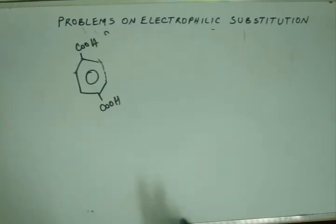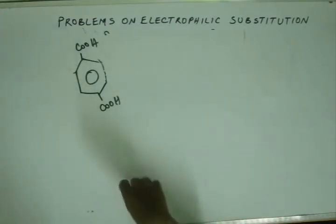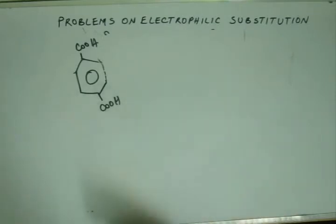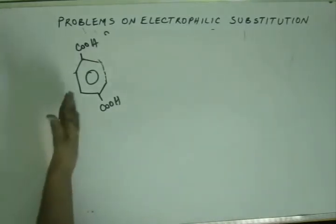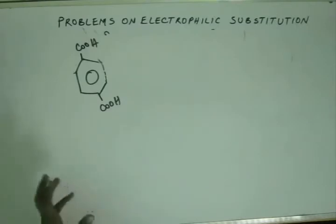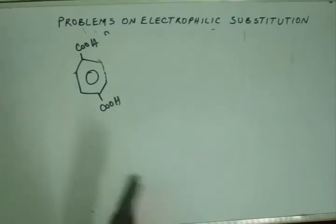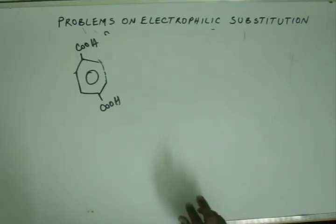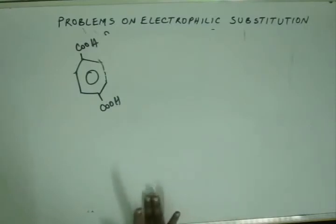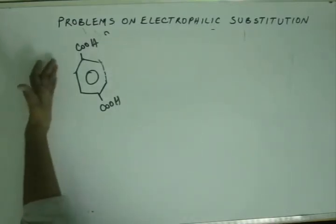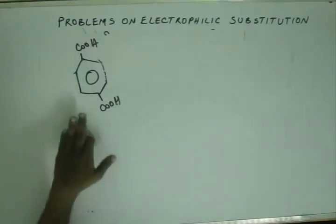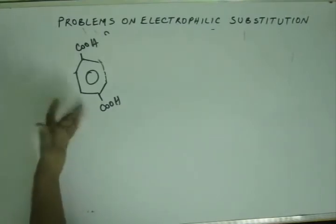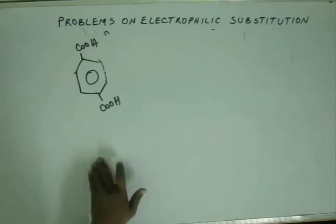Somehow you have to get a group that is Para-directing, get another group at the Para position, and then convert that group into a Carboxylic acid group — because working directly with Carboxylic acid group won't solve the purpose. The convenient group is an Alkyl group via alkylation. Alkyl groups are electron-donating and Ortho-Para directing, so carry out two successive alkylations. Since there is no Hydrogen bonding at Ortho, the major product will be Para-substituted. Both Alkyl groups will end up Para to each other.